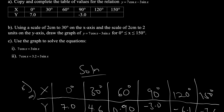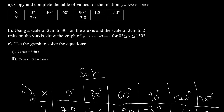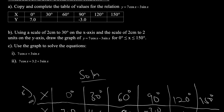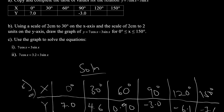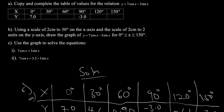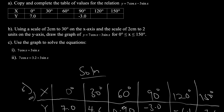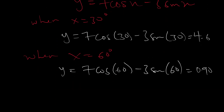Now for question 6b: using a scale of 2 centimeters to 30 degrees on the x-axis and a scale of 2 centimeters to 2 units on the y-axis, draw the graph of y = 7cosx − 3sinx.